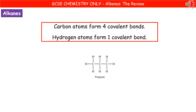You also need to be able to draw the displayed formula of the first four straight-chain alkanes. This is easy if you remember two rules: carbon atoms form four covalent bonds, and hydrogen atoms form one covalent bond. When drawing the displayed formula, put the carbon atoms in a line first in the middle, join them with single bonds (since it's an alkane), then add hydrogens around the outside, making sure every carbon has four bonds and every hydrogen has one. Do a quick count at the end using the general formula to make sure you've got the right number of each.